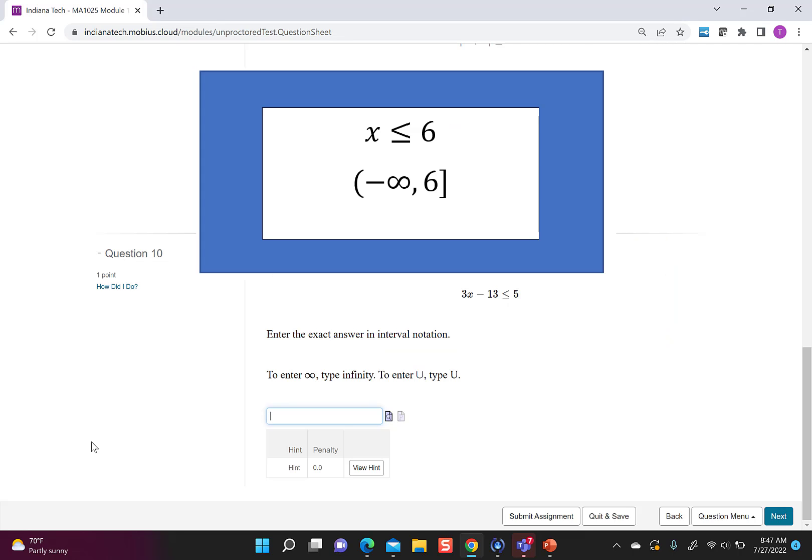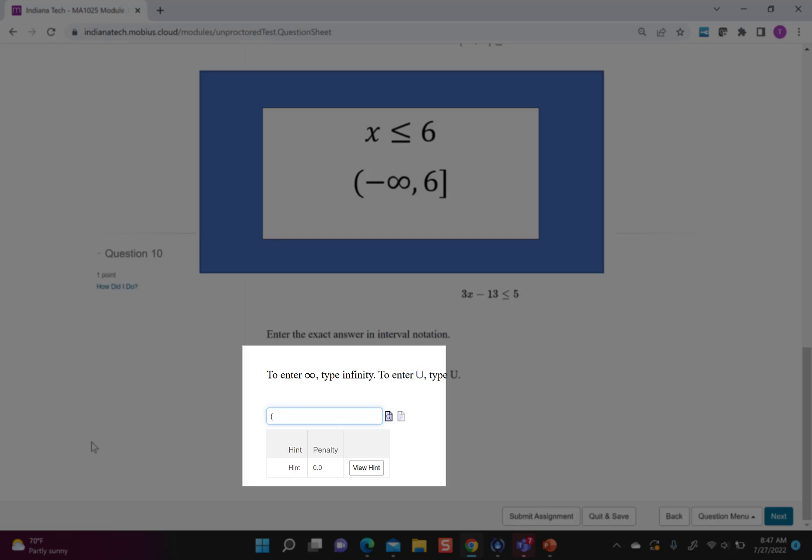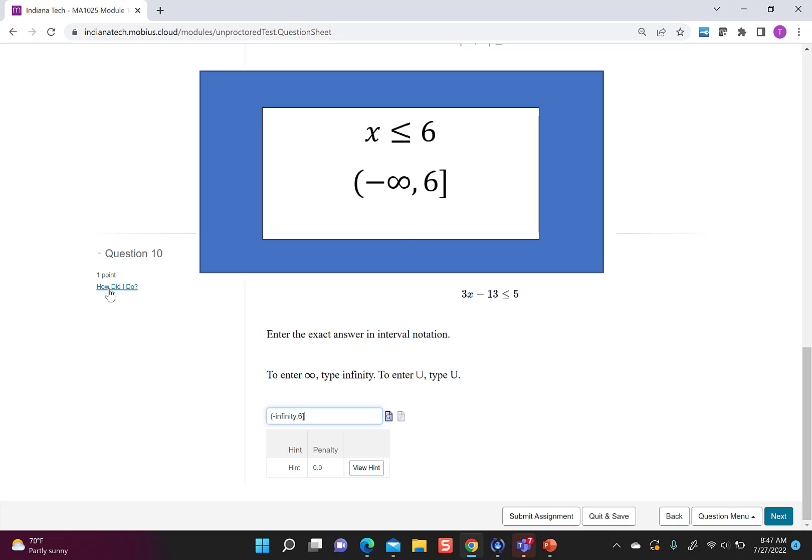So I want to put this into Mobius. In Mobius, less than or equal to 6 means I'm going from negative infinity up until 6, and I have a closed bracket. So I'm going to put a parentheses, type a negative, and then write the word infinity comma 6 close bracket. To check my work, I click how did I do, and it tells me if I'm right or wrong.